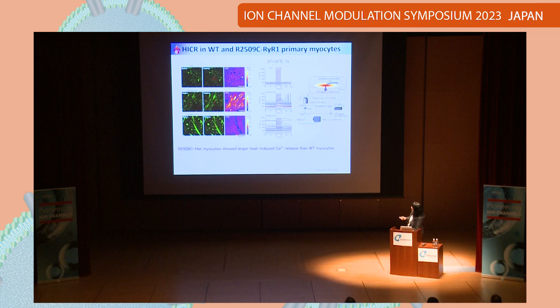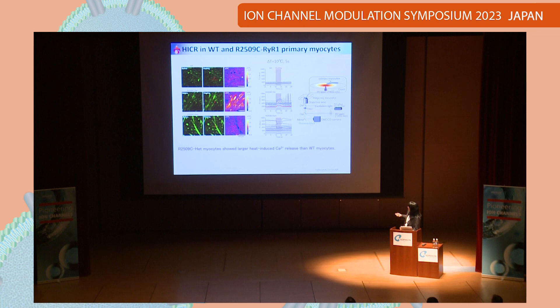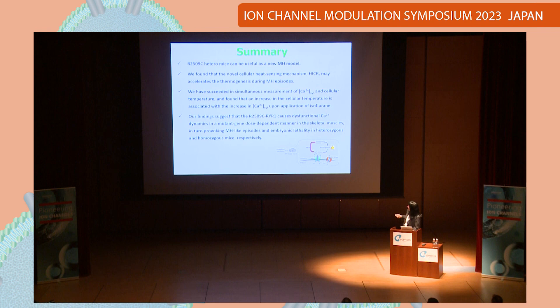Finally, we investigated HICR activity in wild type, heterozygous, and homozygous myocytes. With a temperature jump of 10 degrees over 5 seconds: wild type did not change; heterozygous myocytes showed larger heat-induced calcium release than wild type; and homozygous myocytes showed a decreased calcium transient during heating. To summarize the main findings: we found a normal cellular heat-sensing mechanism. HICR may accelerate thermogenesis during an MH episode through a positive feedback loop — HICR causes calcium release, leading to thermogenesis and temperature increase.